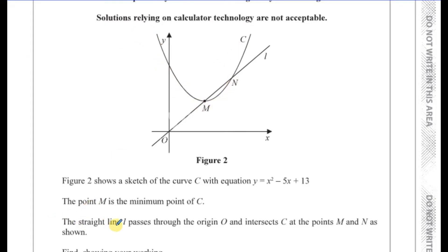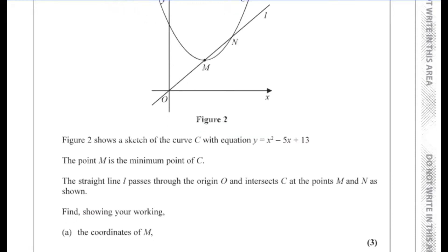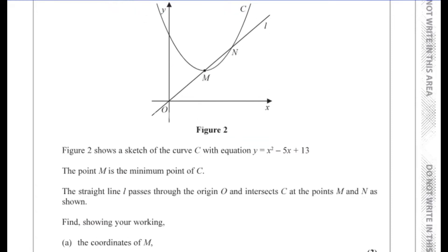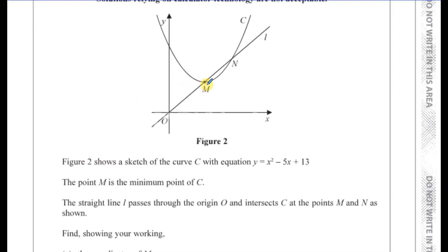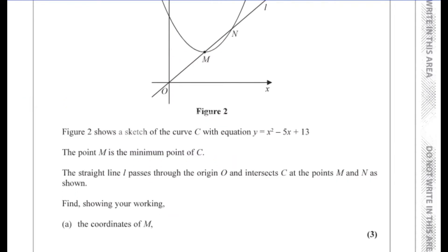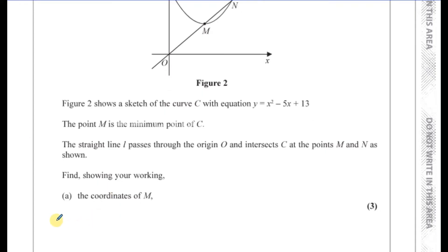The straight line L passes through the origin and intersects C at the points M and N as shown. Find, showing your working, the coordinates of M. M is the minimum point of the curve C. Now there are two ways to find the minimum point of the curve. One way we learned in P1 is by completing the square — that's how you find the vertex of a quadratic equation.